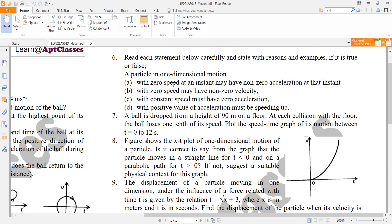Zero speed at an instant may have non-zero acceleration at that instant, statement true. Zero speed may have non-zero velocity, statement false.